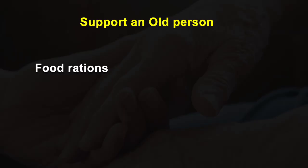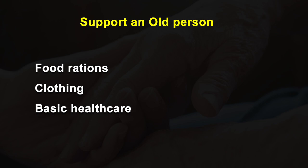Support an Older Person: There are thousands of destitute elders who need basic support. Over the years, HelpAge India has enabled more than 30,000 destitute elderly to sustain themselves with regular supplies of food, ration, clothing, basic health care, and sometimes provided livelihood opportunities.